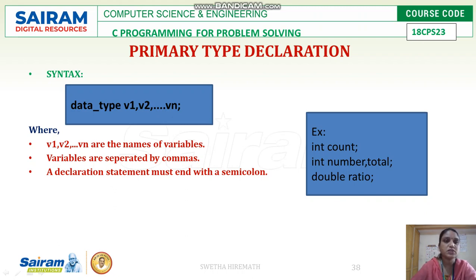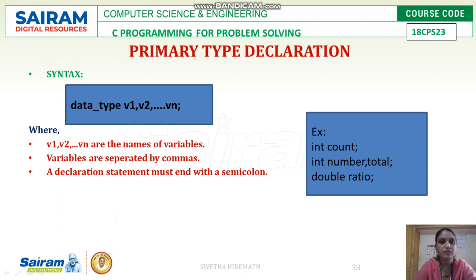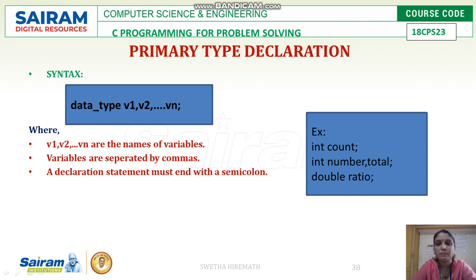The syntax is: data type followed by the variable names — v1, v2 till vn — which are of the specified data type. Variables are separated by commas and a declaration statement must always end with a semicolon. If we do not follow the syntax of C language, it will show a syntax error during the execution part of our program. If the compiler doesn't find the syntax accordingly, it will display a syntax error.